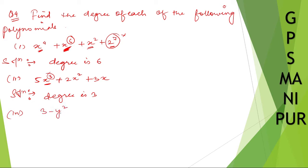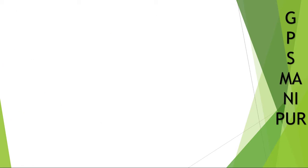Roman number 3: 3 minus y squared. So what is the highest power? There is only one variable and the highest power is 2. So therefore degree is 2.